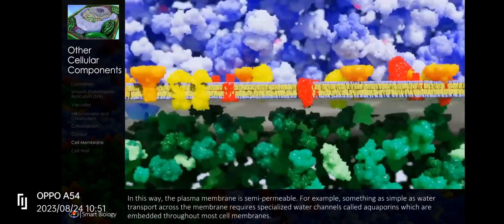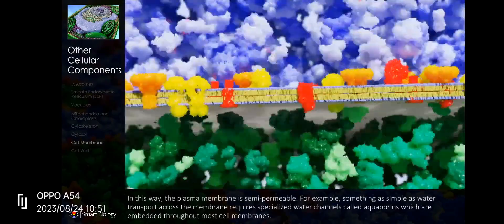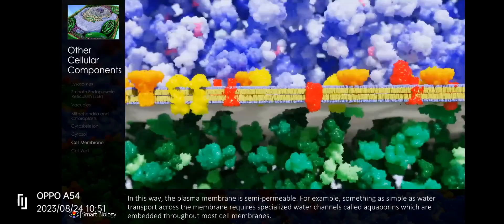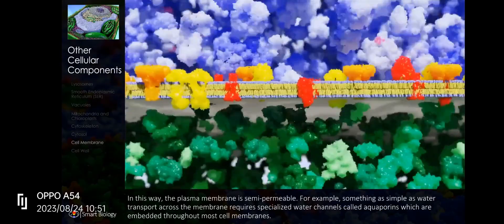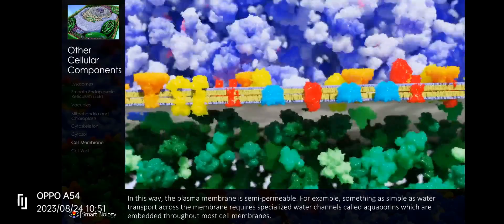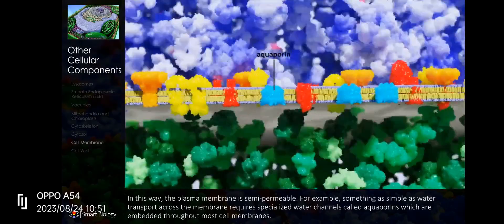In this way, the plasma membrane is semi-permeable. For example, something as simple as water transport across the membrane requires specialized water channels called aquaporins, which are embedded throughout most cell membranes.